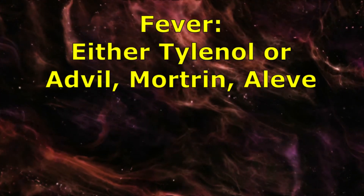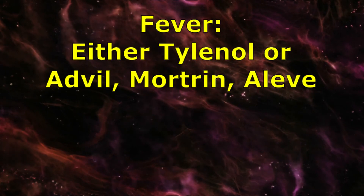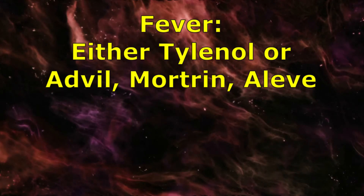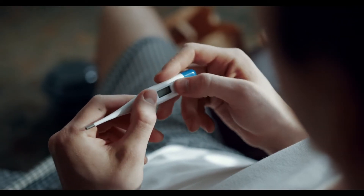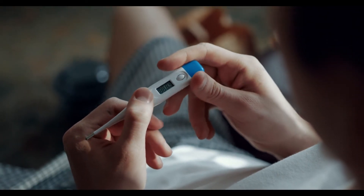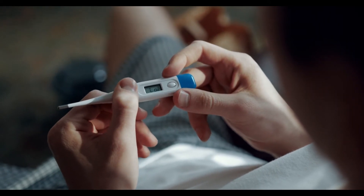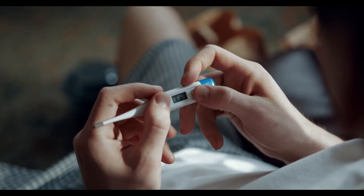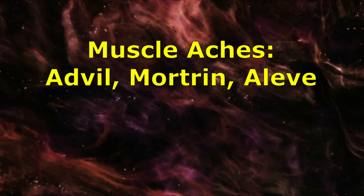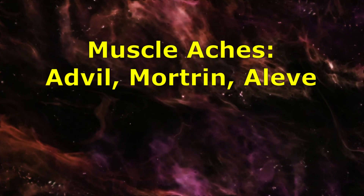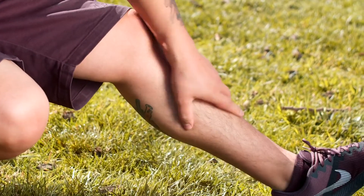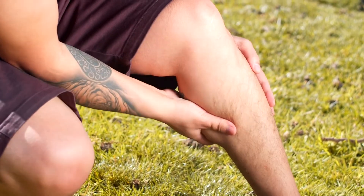For fever, either acetaminophen (Tylenol) or an NSAID (Advil, Motrin, Aleve) can work. Some people find relief from acetaminophen, others from ibuprofen. If your fever is accompanied by an upset stomach, take acetaminophen — ibuprofen and naproxen may make your stomach feel worse. For muscle aches or strains, ibuprofen (Advil, Motrin) and naproxen (Aleve) are better choices, as their anti-inflammatory properties address soreness that typically stems from inflammation.